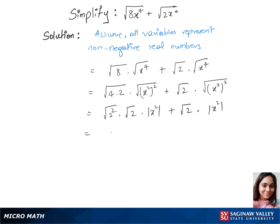Now we have 2 root 2 x squared plus root 2 x squared. We'll add this up and we have 3 root 2 x squared. This is our final answer.